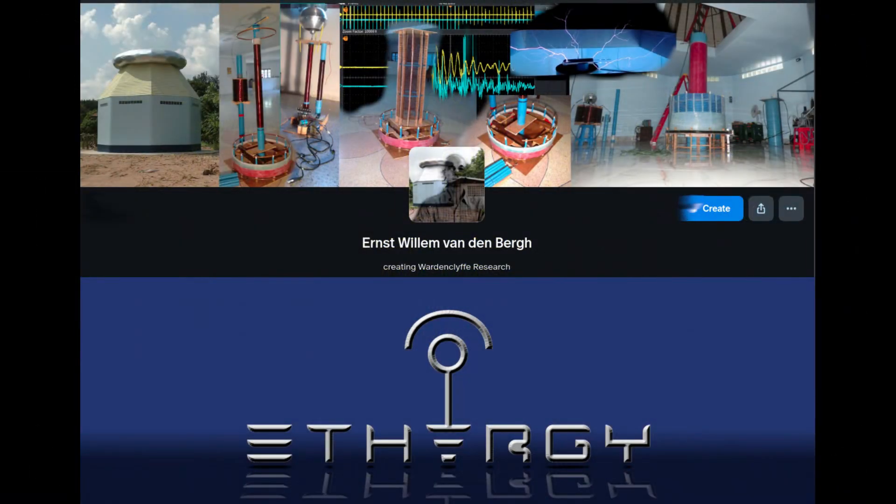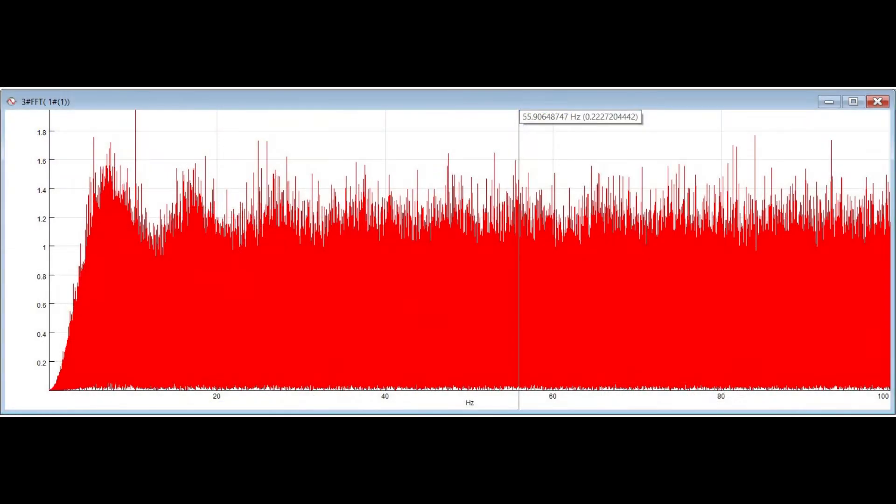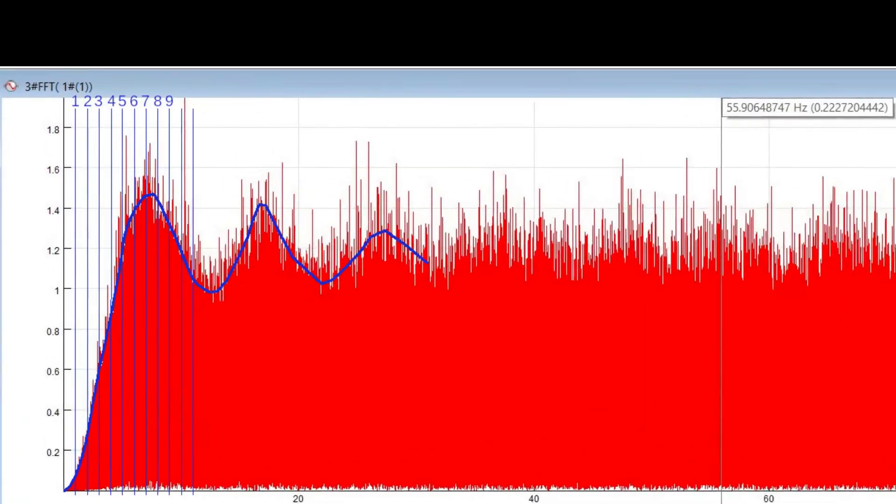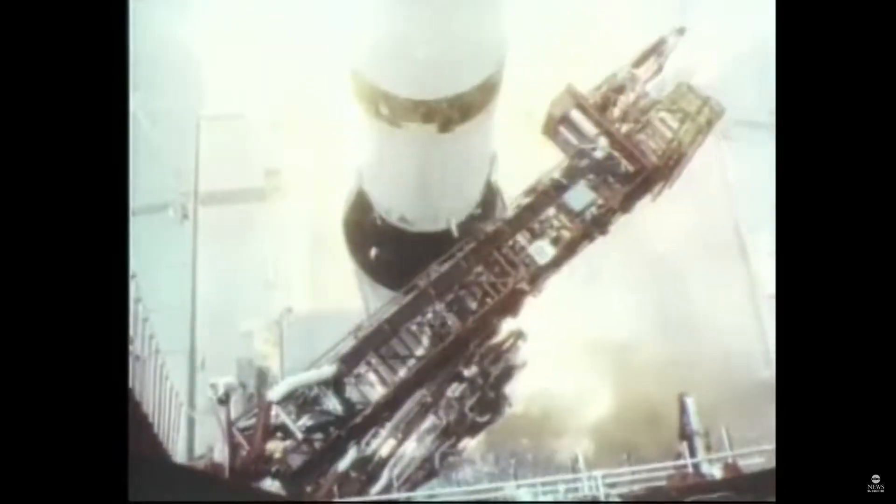We, the Wardenclyffe Research Group, have experimentally confirmed that there are rhythmical variations in the electric permittivity. Unfortunately, the base frequency of these variations was 7.5 Hz instead of 11.77. This frequency suggests a surface wave and not a density wave through the center of the Earth. But something that doesn't happen naturally may still be possible.